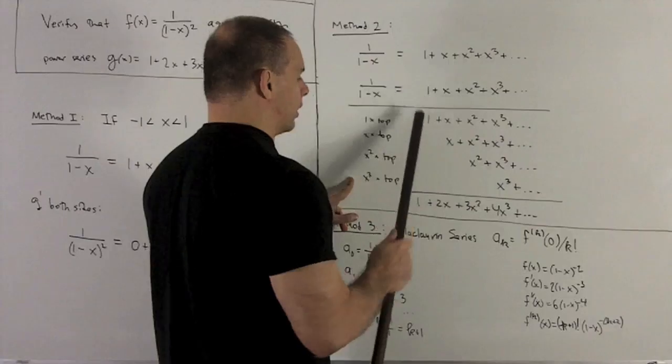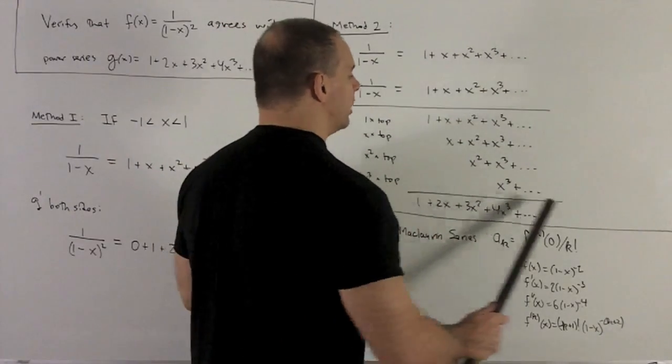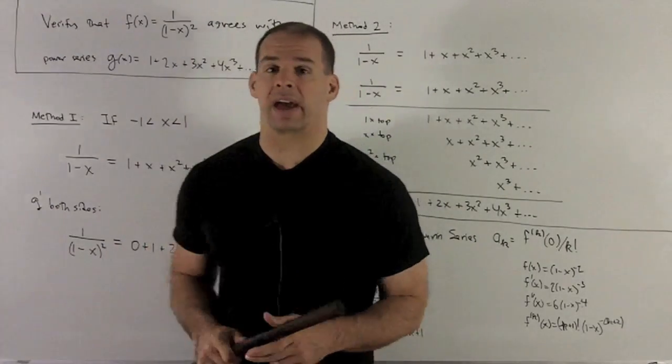I add up down the column, so I'm going to get 1, 2x, 3x², 4x³, and so on. So this agrees with my g(x).